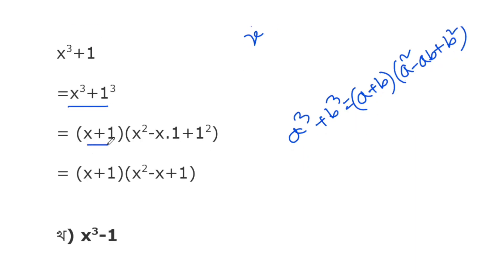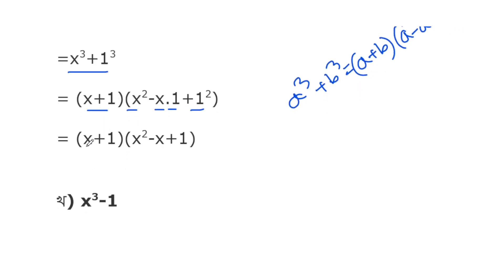So applying this, (x+1) is common, giving us x times... where a is x and b is 1. The final answer is (x+1)(x²+x+1).